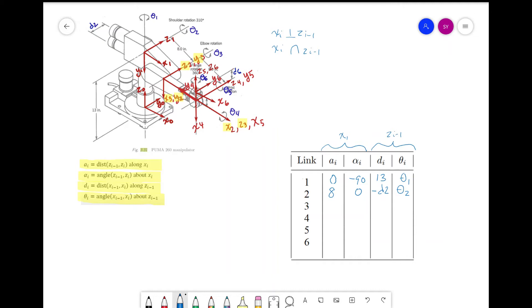For link 3, we can see that a is 0 as frame 2 and 3 share the same origin. For alpha is 90, as we need to rotate 90 degrees counterclockwise to align z2 with z3 about x3. D_i is 0 as, again, there's no distance between the origins. For theta, we have a joint rotation of theta_3, and then we also need to account for the rotation needed to align x2 and x3 about z2, which is 90 degrees.